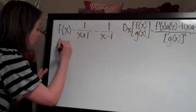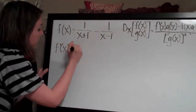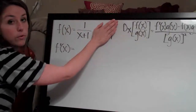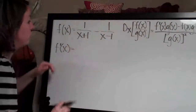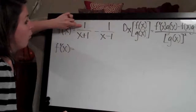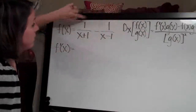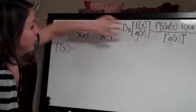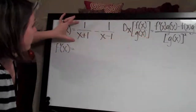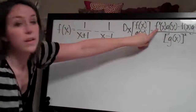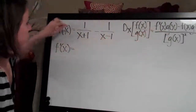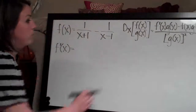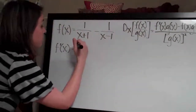The derivative — we call it f prime of x — so we're just going to look at 1 over x plus 1 first. Remember, 1 is f of x because it's on the top, and x plus 1 is g of x because it's on the bottom. The first thing is f prime of x, which means the derivative of f of x, the top — which is 1. The derivative of 1, being a constant, is 0.